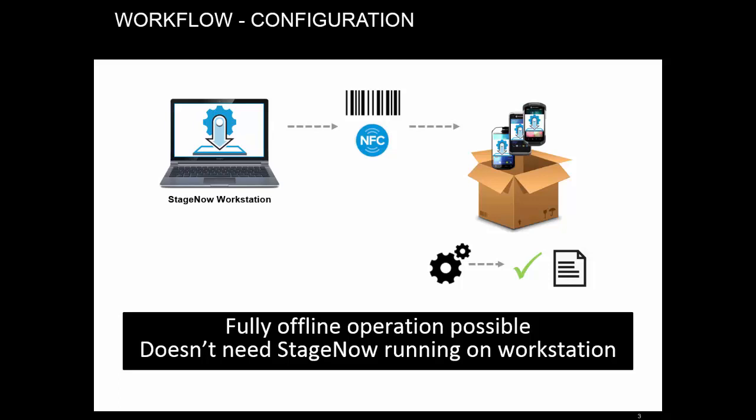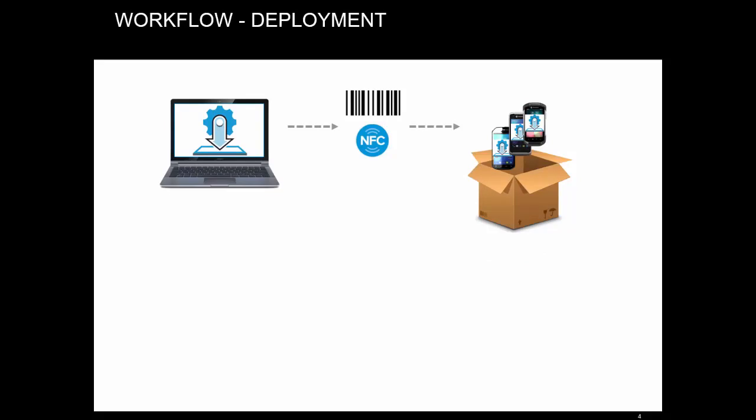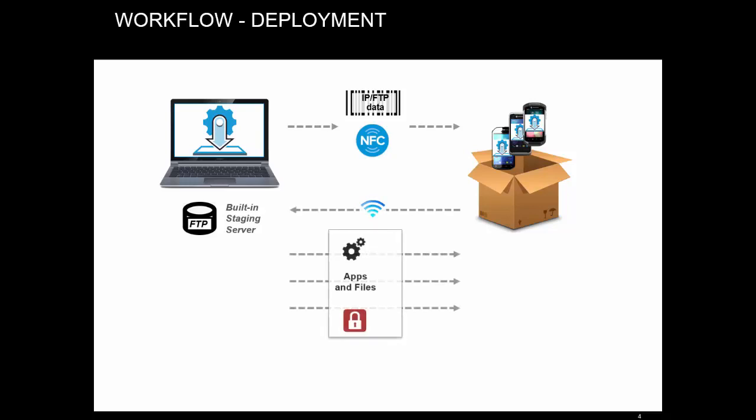How many barcodes will it take to encode a 50-meg application package? When you need to deal with large amounts of data, Stage Now uses file downloads. To enable that, Stage Now automatically sets up an FTP server on your workstation, which runs whenever Stage Now is running. The barcode or NFC tag then only contains references to the files on that server and necessary actions. Stage Now client will connect to the server and carry out the instructions.